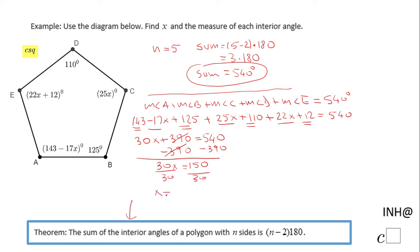And we have x. The x is 5. Now we can go to the next stage. We can find the measure of these interior angles. The measure of angle A is 143 - 17x, so we're going to plug 5 in for x.